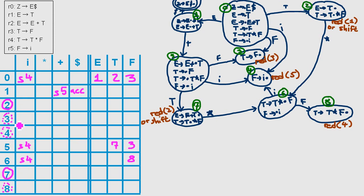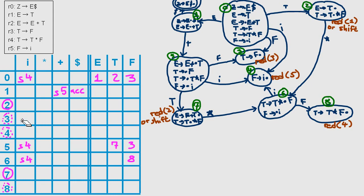Let's start with the easiest ones — state number three. We have reduction rule three that we can apply. We have to take care about which input characters we apply the rule to. Remember from the last video that some books or videos just write the reduction for all inputs if there's only one rule in the state, but that's not really correct.